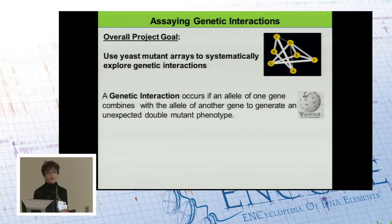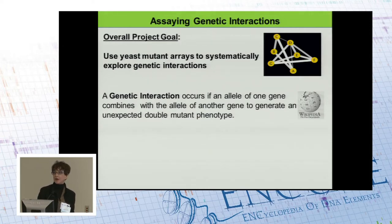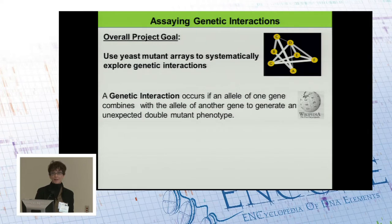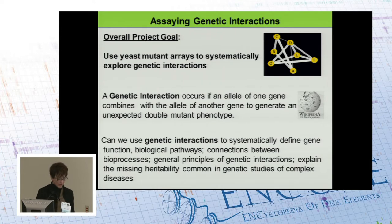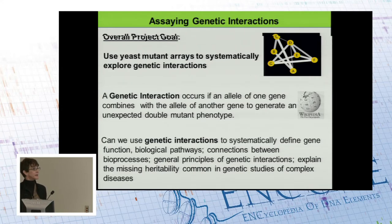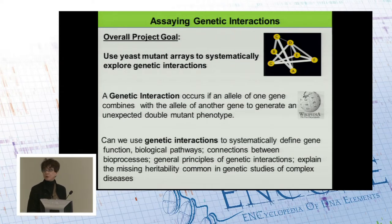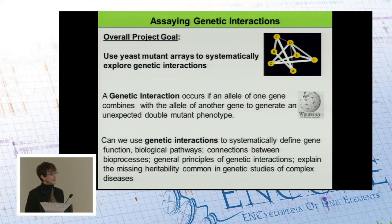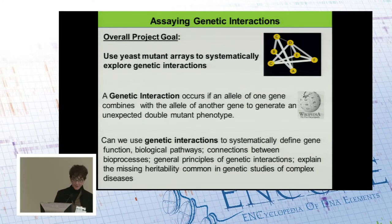We're looking for phenotypes that are not predicted by the combination of the individual mutant phenotypes. In looking for genetic interactions, you can measure any phenotype of interest — expression of a gene, cell growth rate, cell morphology. Our big question is: can we use genetic interactions to systematically define function? The answer is clearly yes — biological pathways, connections between bioprocesses, general principles of genetic interactions, and potentially explaining the missing heritability common in the genetics of complex disease.